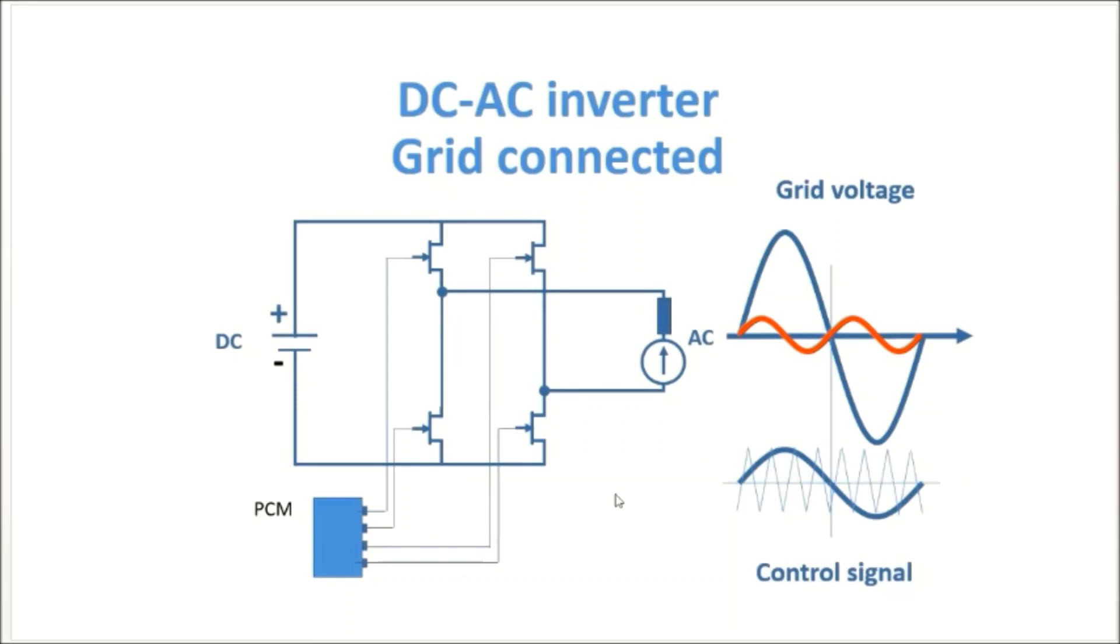In order to do so, we will start to give the control signal a certain phase shift compared to the grid voltage signal, meaning we start to give it the leading edge. Then you can see how we give it a leading edge, so we move it in this direction. And as a result, we see that the power from the battery starts to be pushed into the grid.